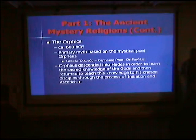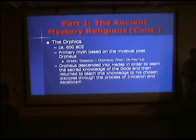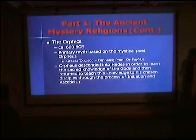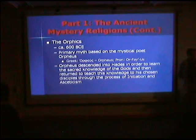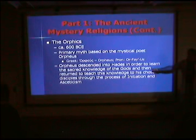Finally, the Orphics — right around 600 BCE, and still present even in Aristotle's time. They eventually became the Gnostics. Their primary myth was based on the mystical poet Orpheus, who descended into Hades to learn the sacred knowledge of the gods and then returned to teach this knowledge to his disciples through the process of initiation and asceticism. Here again we find initiation and discipline. Orpheus descends to Hades — the practice of death — to gain knowledge, then returns to pass it on through initiation and self-discipline.